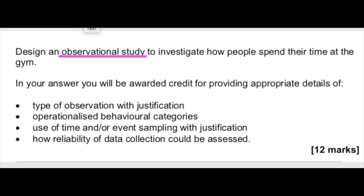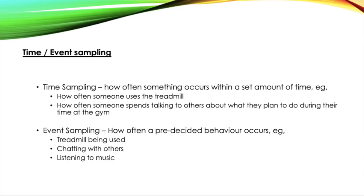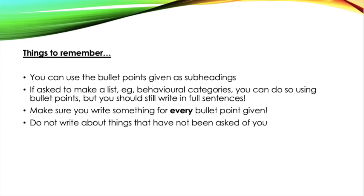Finally, you're asked how the reliability of your data can be assessed — this will include points from what you have already written. You want to give an example of inter-rater reliability. For example, if your method involved recording notes at the gym, you could have another researcher review the recording and see if they agree with what you found. If you used event sampling, you would check whether similar categories are identified and whether the number of tallies match what you found, tying everything together.